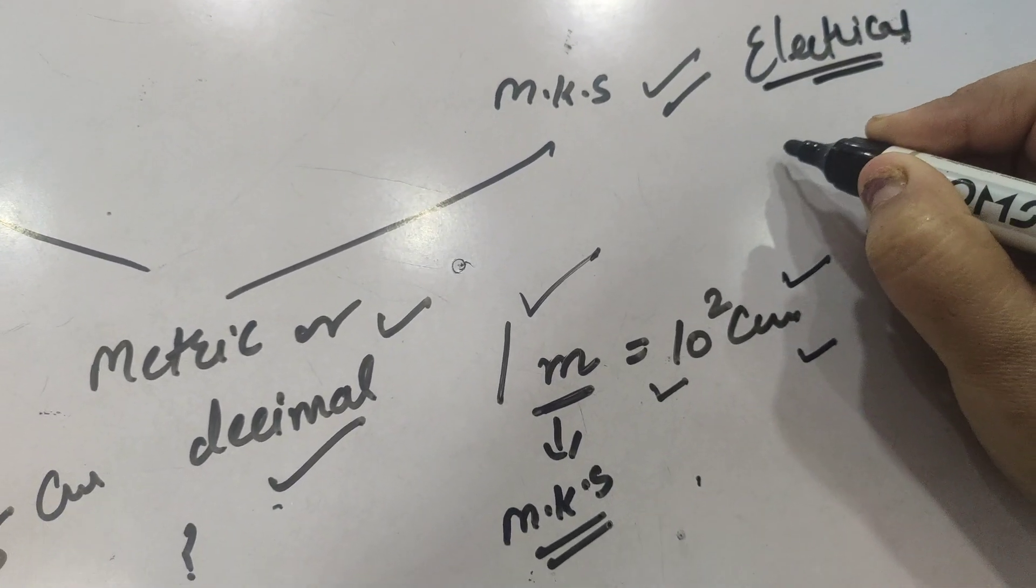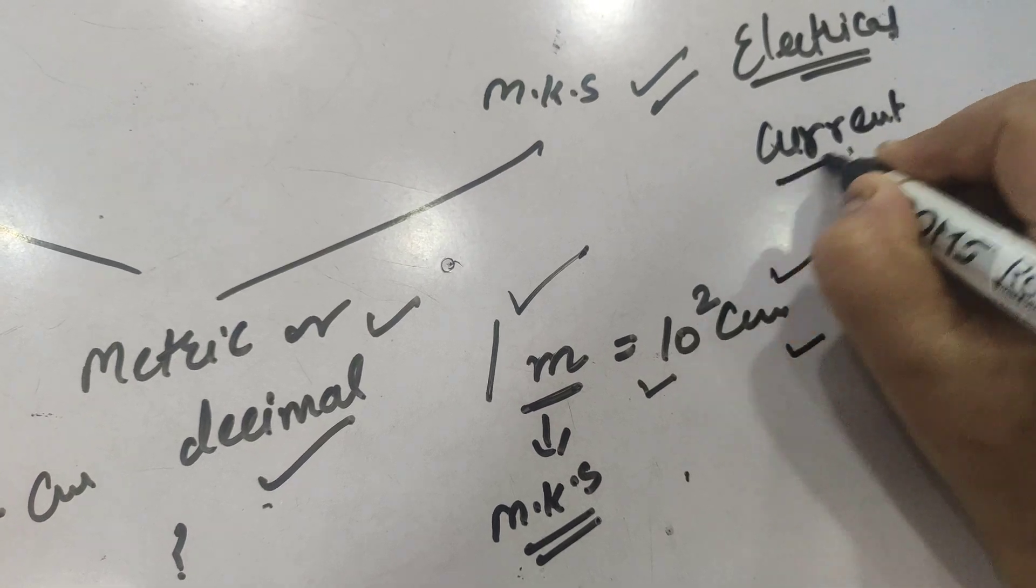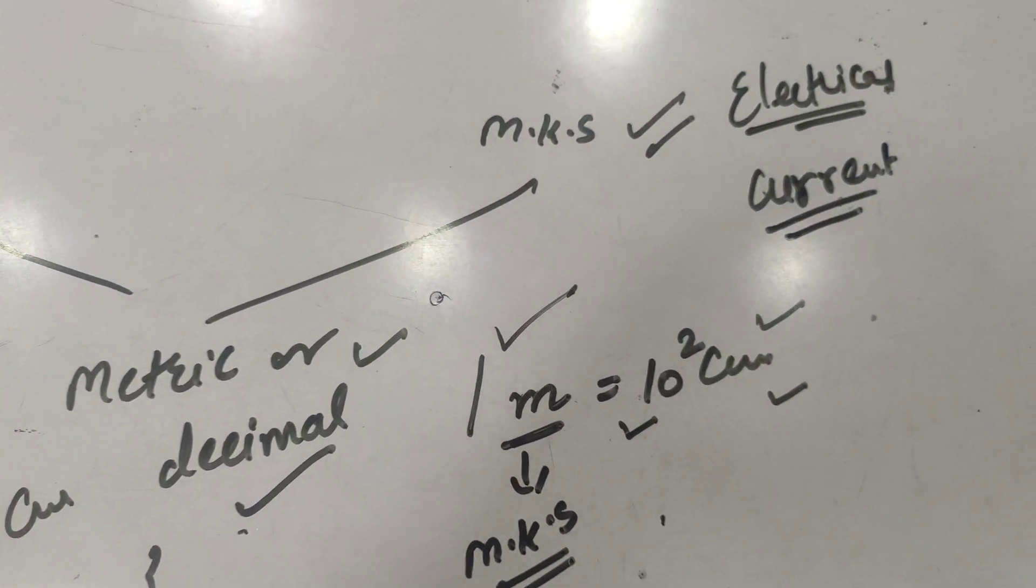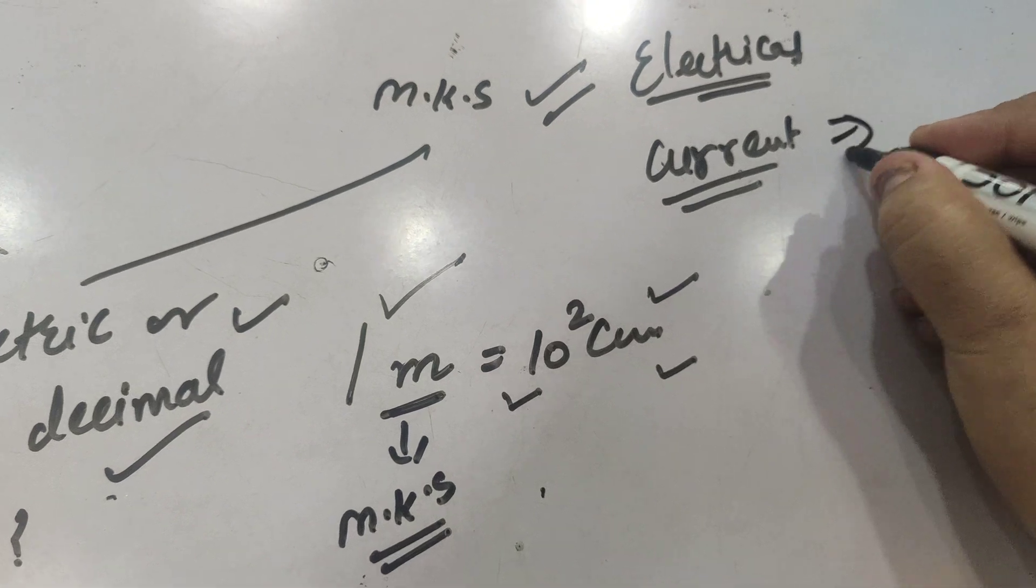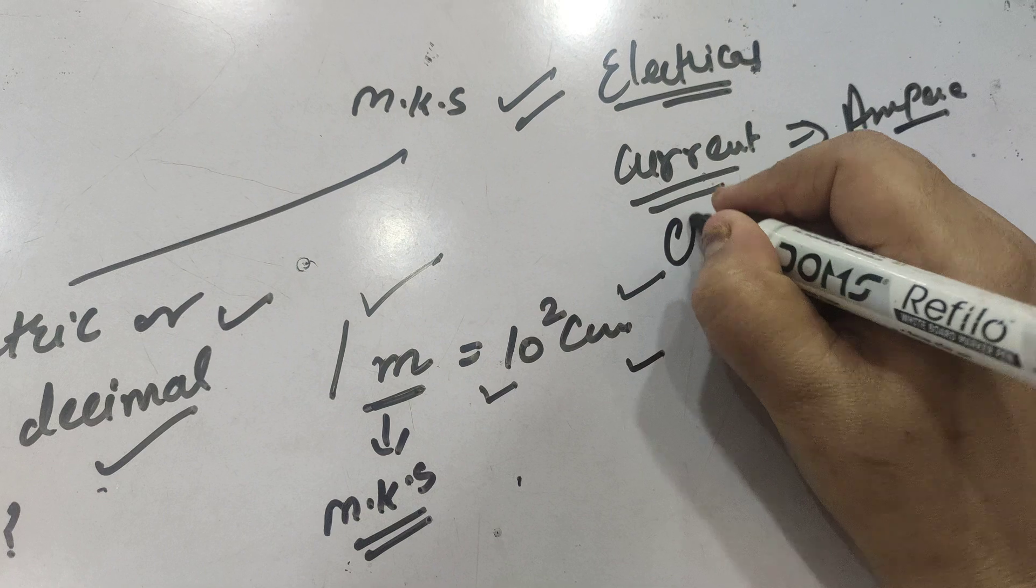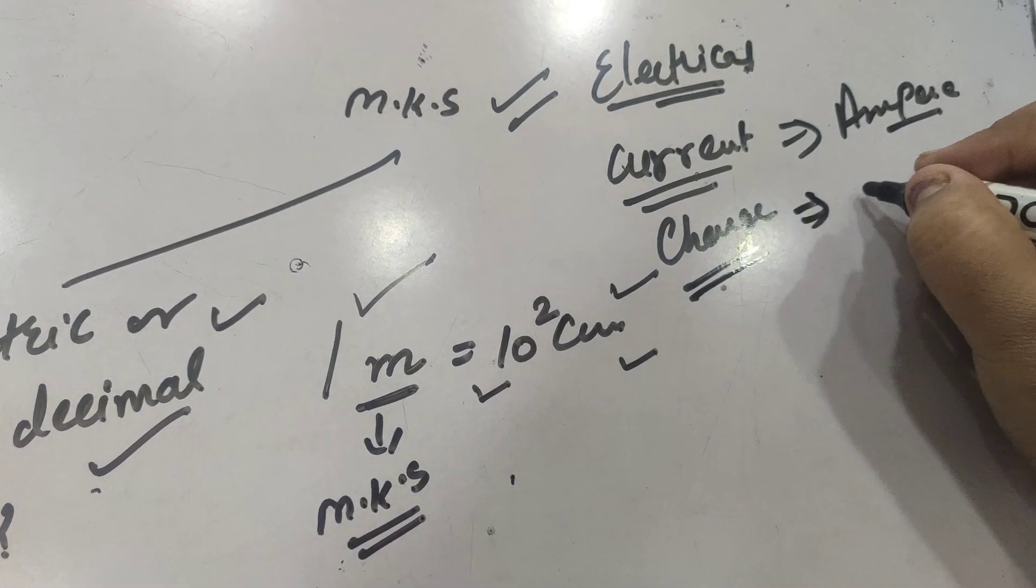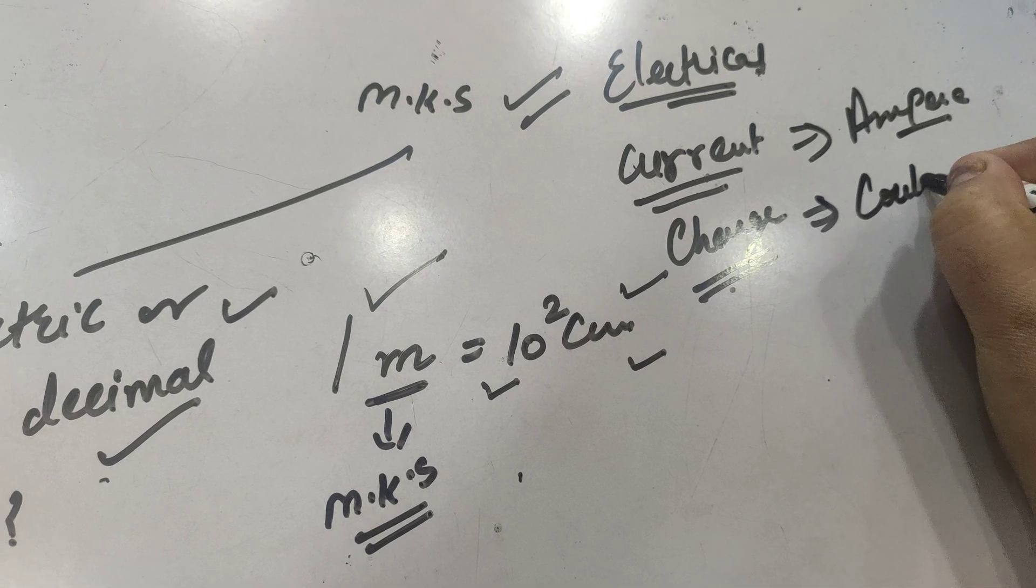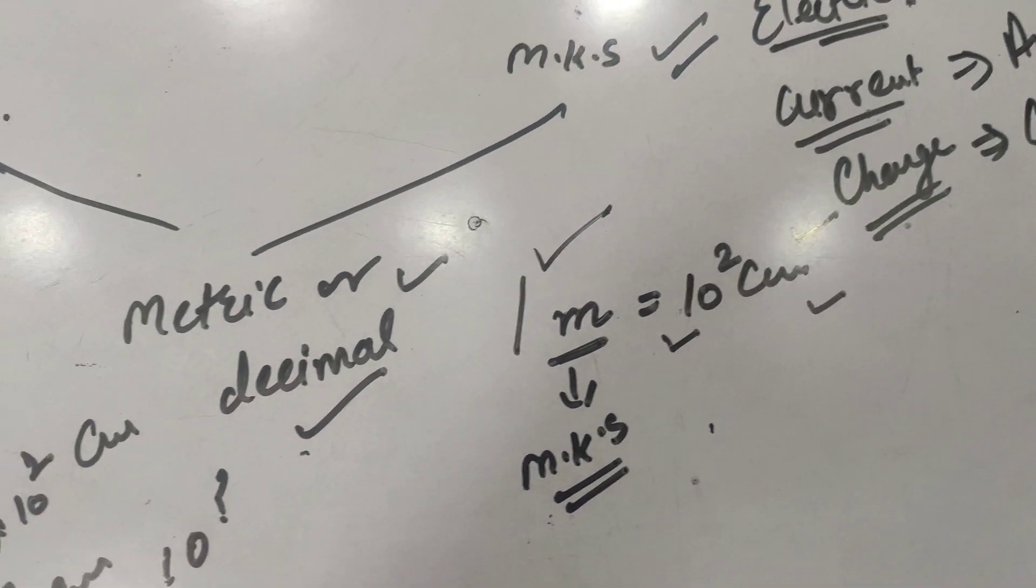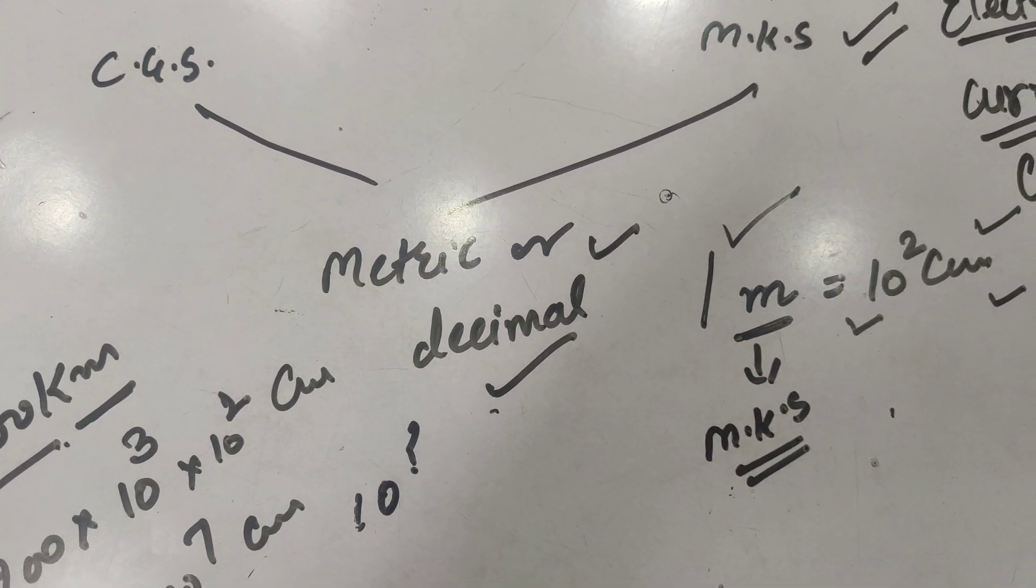example, for current, which is considered to be a fundamental quantity, the unit is ampere in MKS system. Similarly, charge, which is another fundamental quantity, has the unit Coulomb. So these are the advantages of MKS system over the CGS system.